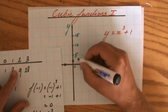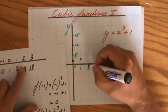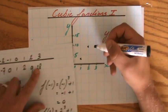1, 2. 1, 2. 1, 2. Okay. 2, 9. 2, 9. And 3, 28.